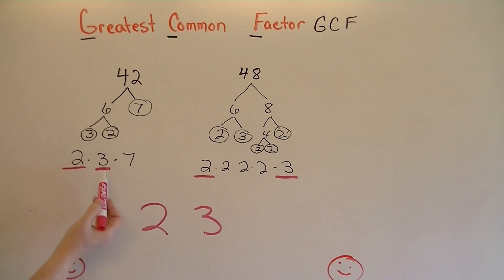They have one 2 in common and one 3 in common. So I pick the 2 here and the 3 here, and then I multiply those. And so the greatest common factor for 42 and 48 would be the number 6.